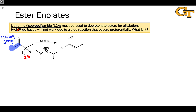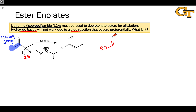Whatever you do with an ester to try to generate an enolate, do not use hydroxide base — it absolutely will not work due to a side reaction that occurs instead of deprotonation. If you think about the potential of OR to act as a leaving group, you may have already guessed the reaction that can occur. It's a variant of nucleophilic acyl substitution called saponification, or ester hydrolysis under basic conditions.